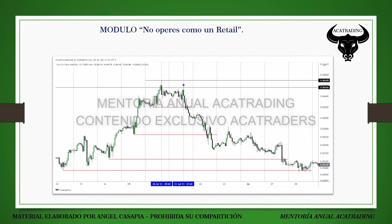El estilo de trading que apliquemos determinará si vamos a esperar neutralización de dos días para salir. Si vamos a arriesgar 20 pips y salimos con neutralización de dos mínimos diarios, saldríamos con un ratio de 60 u 80 pips. Siempre vamos a encontrar una reacción en este tipo de contextos cuando los mínimos se neutralizan. En algunos contextos el precio, una vez que neutralice el mínimo diario anterior, no necesariamente va a retroceder mucho.